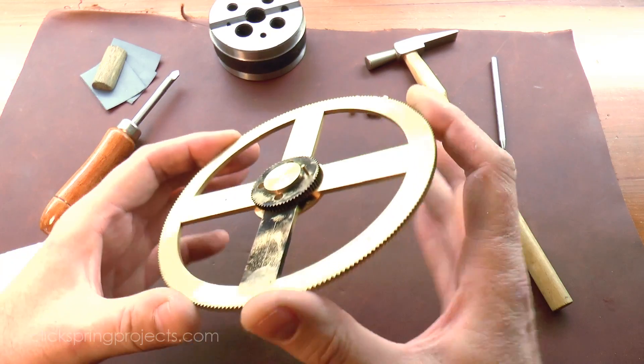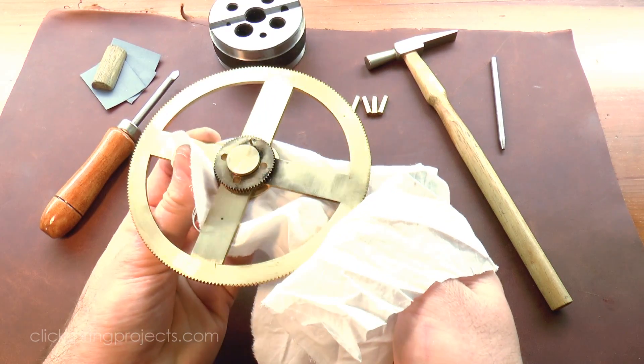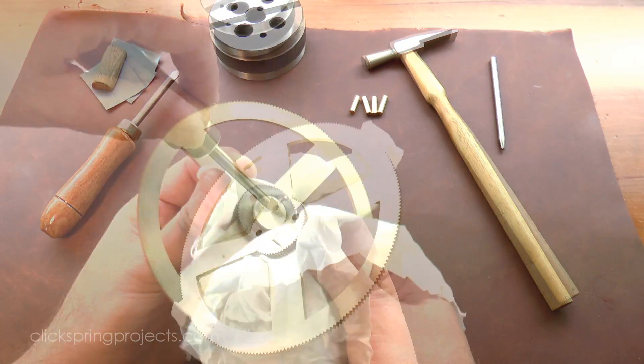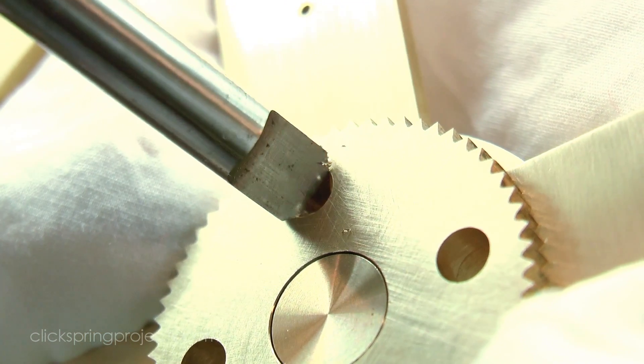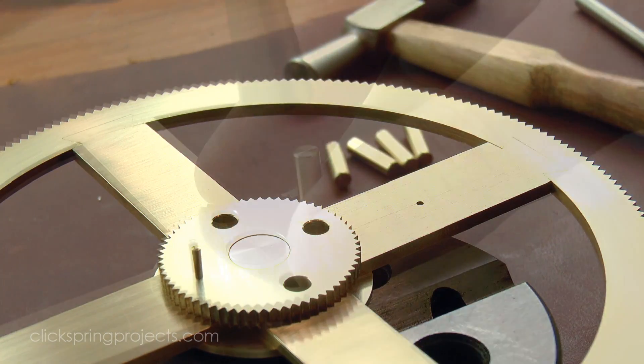By now of course a lot of the soot has worn off, so I think it's clear that it really wouldn't be suitable for marking out anything that needs a lot of handling, like for example the wheels. But despite that flaw, it did a reasonable job in this situation, so I'll keep it in mind for some future parts.